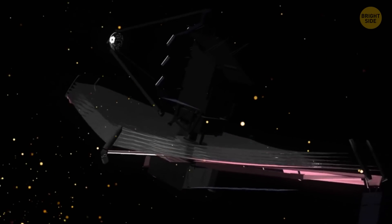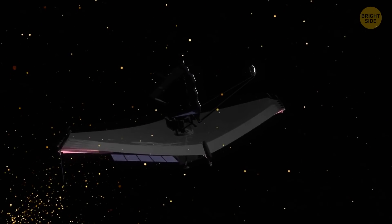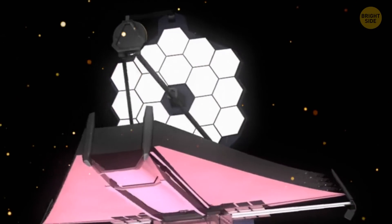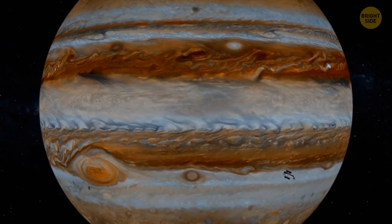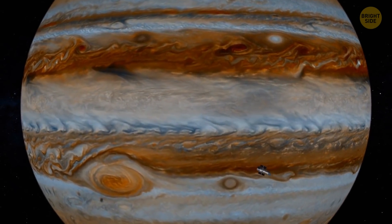And the JWST coronagraph can block the light from up to 100 stars at once. We can expect a swarm of exoplanets. This brings us to the next high-tech gadget the JWST has up its sleeve, a no-slit spectrograph.